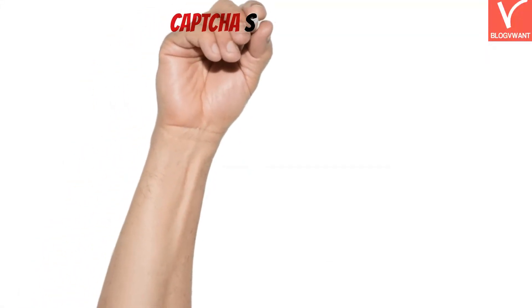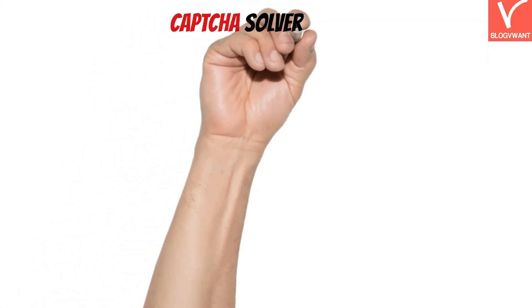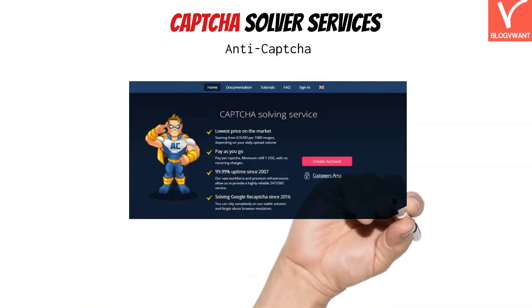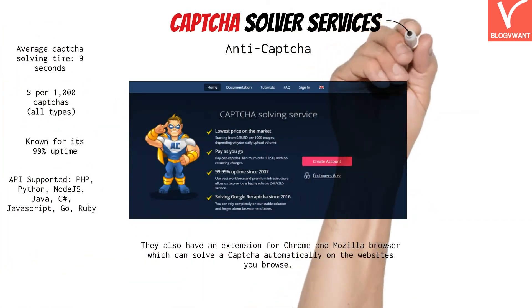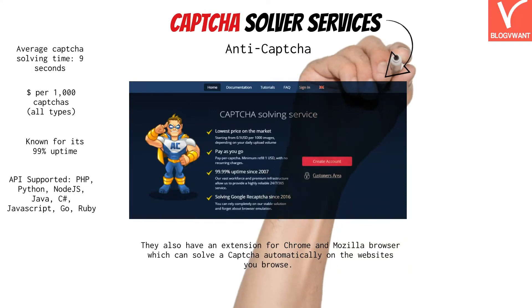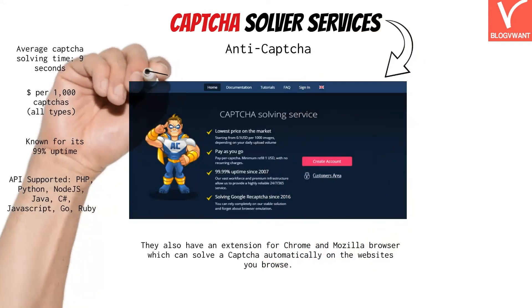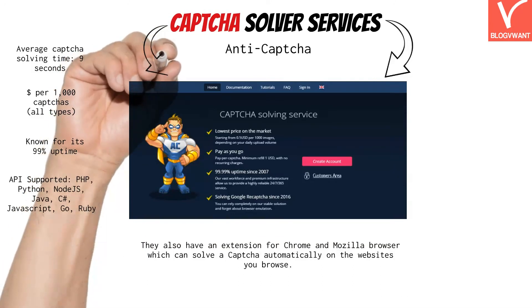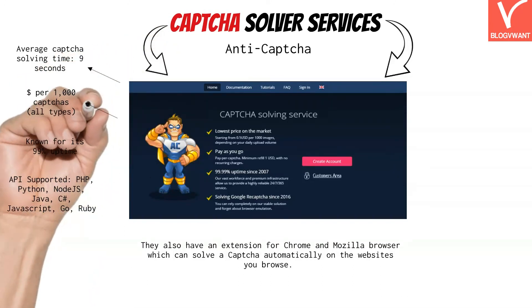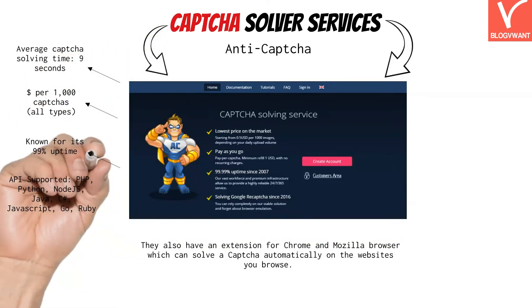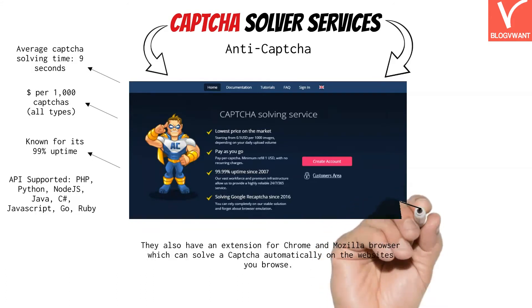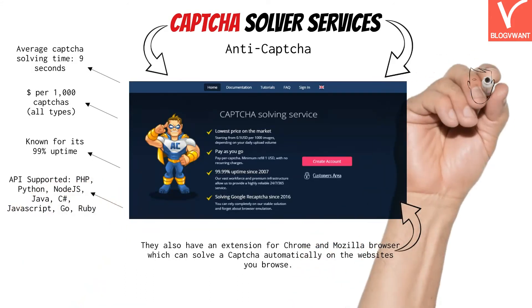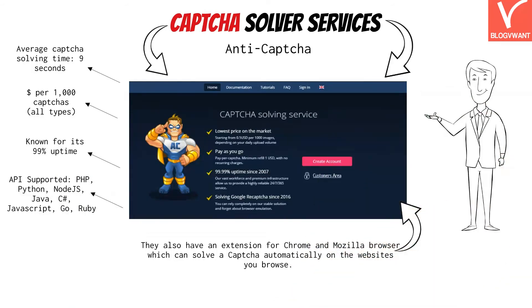The next one is Anti-CAPTCHA. Compared to pricing, this one is cheaper than the previous service — Anti-CAPTCHA charges only $1 per 1,000 CAPTCHAs, regardless of CAPTCHA type. Anti-CAPTCHA also shows you live how many workers are free and how many CAPTCHAs they can handle per minute. They also have an extension for Chrome and Mozilla browsers that can solve CAPTCHAs automatically on the websites you browse.